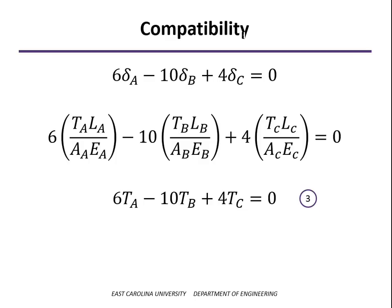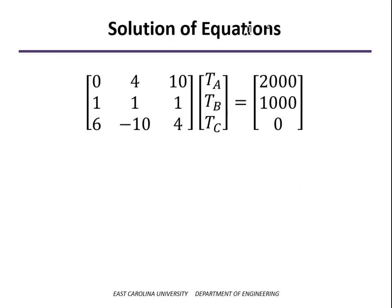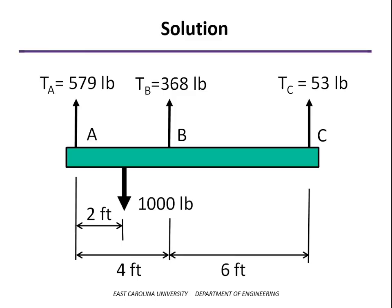So with this one compatibility equation and our two equilibrium equations, we now have three equations to solve for the three unknowns. We could use substitution to do that. I'm just going to set them up in matrix form and take the three by three coefficient matrix, invert that, multiply by the force matrix, the 2,000, 1,000, 0, and the product of those two matrices then will be the unknown tension forces. In this case, 579, 368, and 53 pounds for A, B, and C.